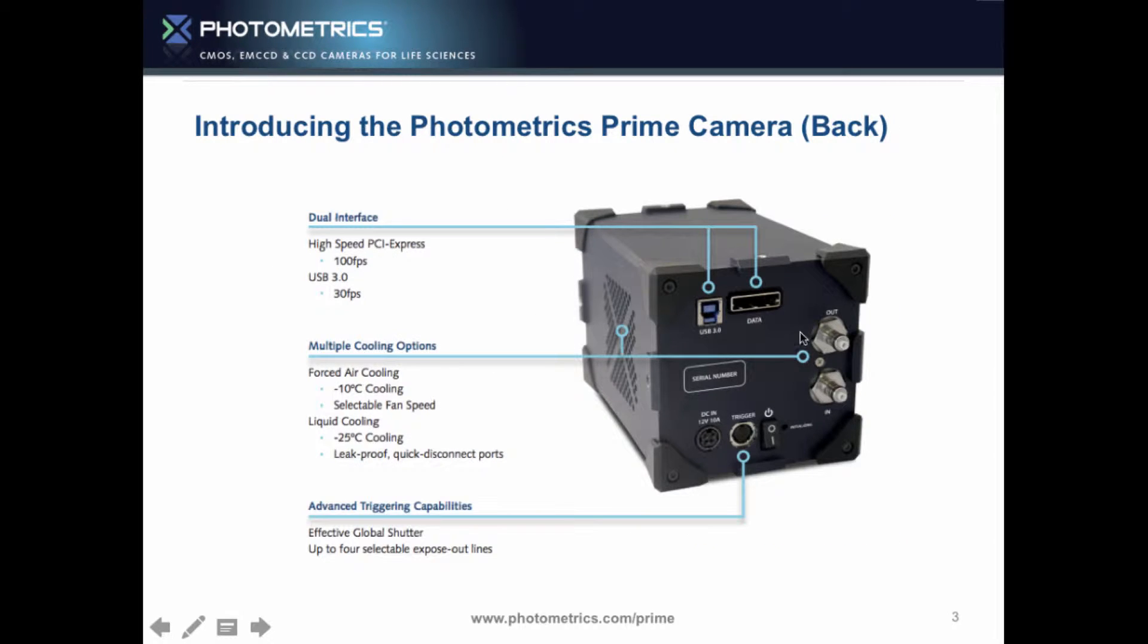On the back, we give you on the same camera, one price, one product: PCI Express for 100 frames a second or USB 3 for 30 frames a second. If you want to do 30 frames a second or higher, just put the card in, you're going to run this on a decent PC anyway. Pop the card in and you're up and running.